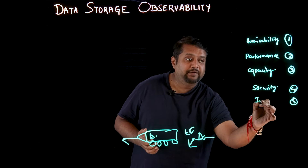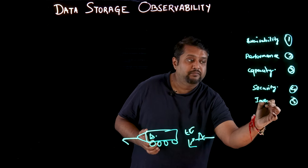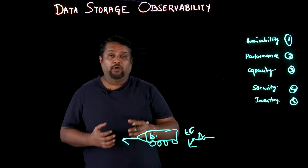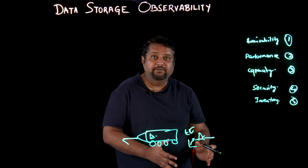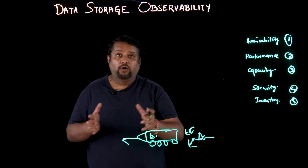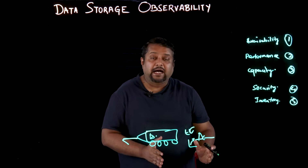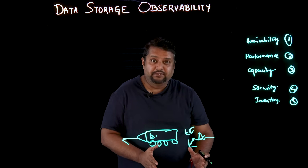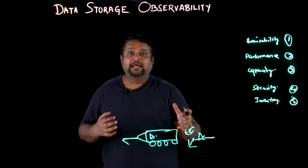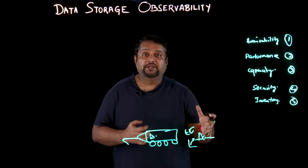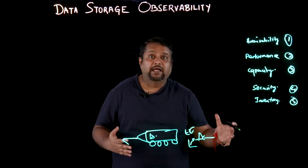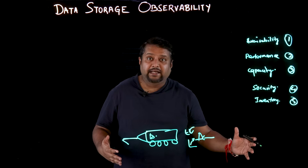The fifth pillar is inventory. What does my inventory look like? How many block storage devices do I have? How many file storage devices? How many are hyper-converged? All these critical questions can be answered so that I can plan my storage infrastructure better.